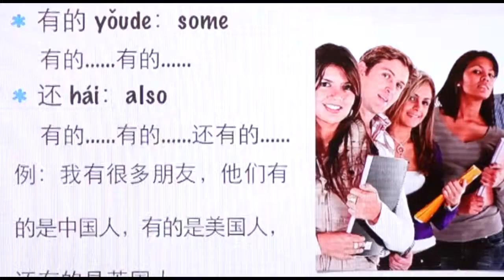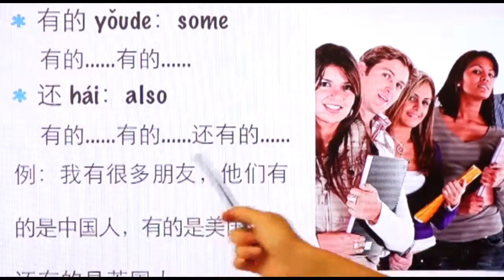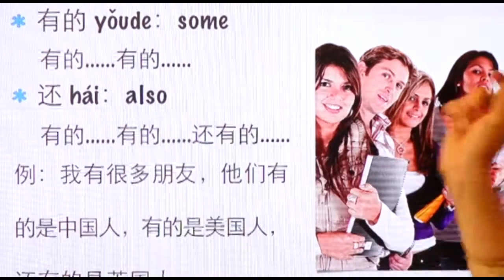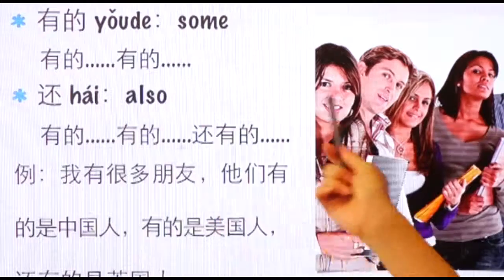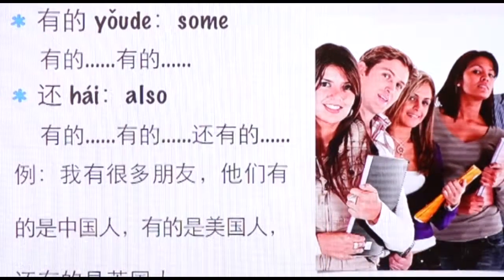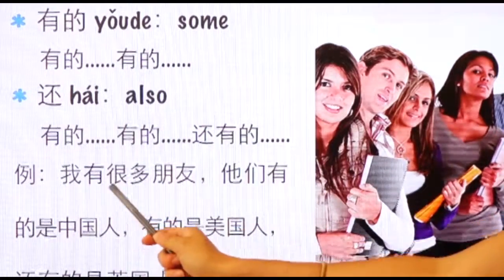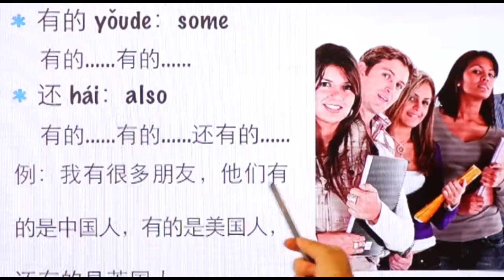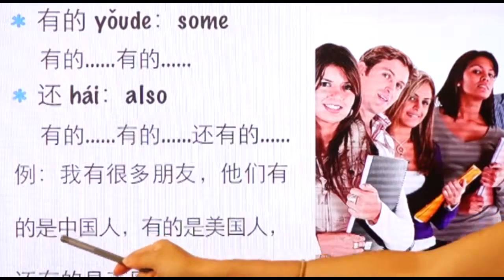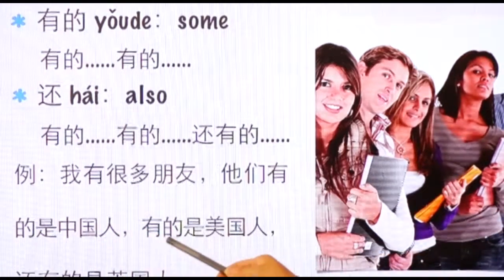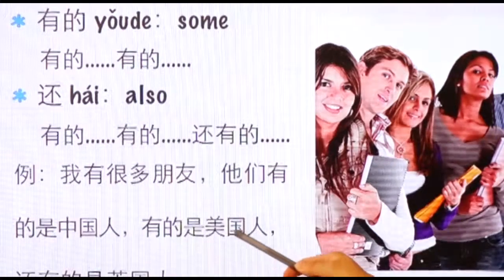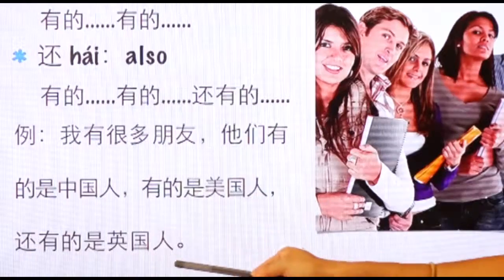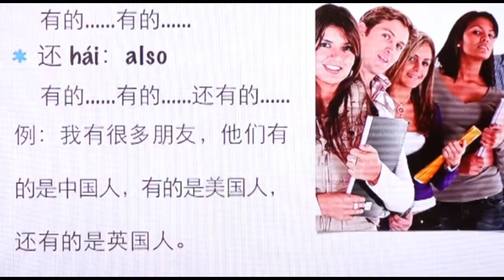Can you read characters with me? Actually, at this level, you should be able to read most of them. Let's read them together: 我有很多朋友。他们有的是中国人。有的是美国人。还有的是英国人。Can you translate?